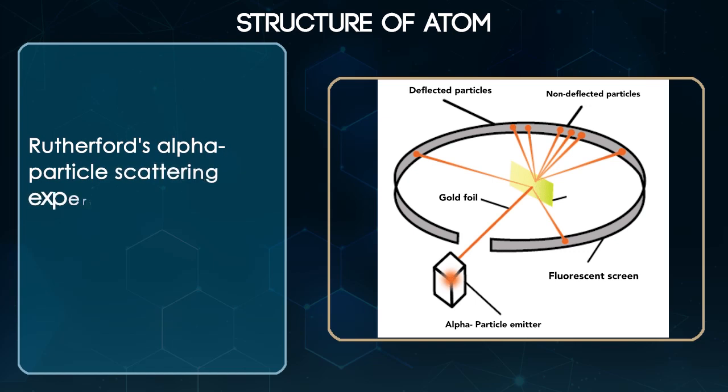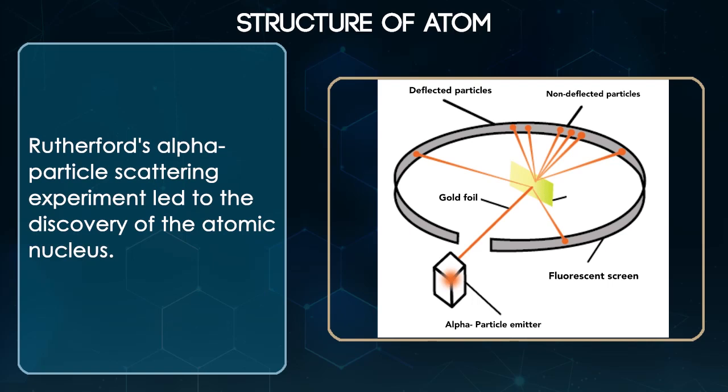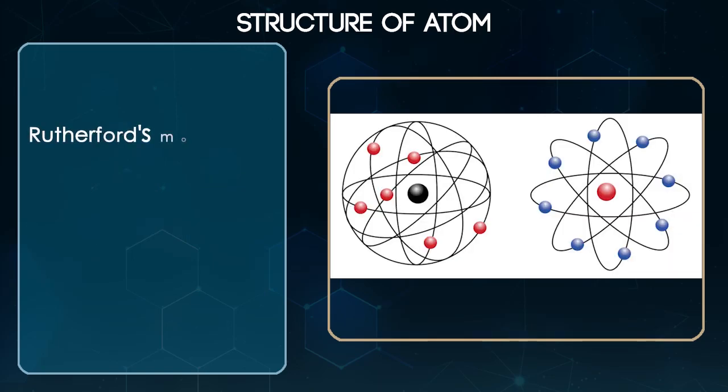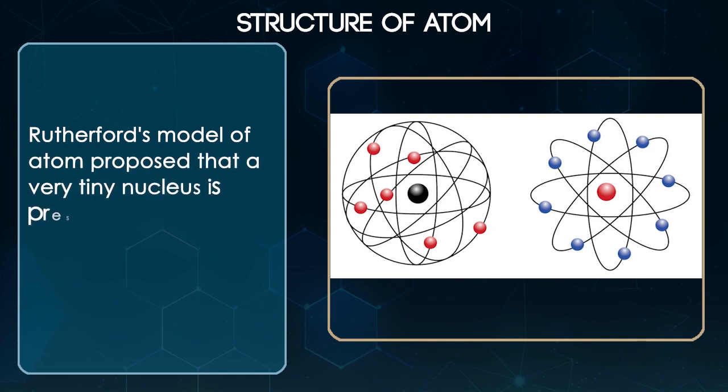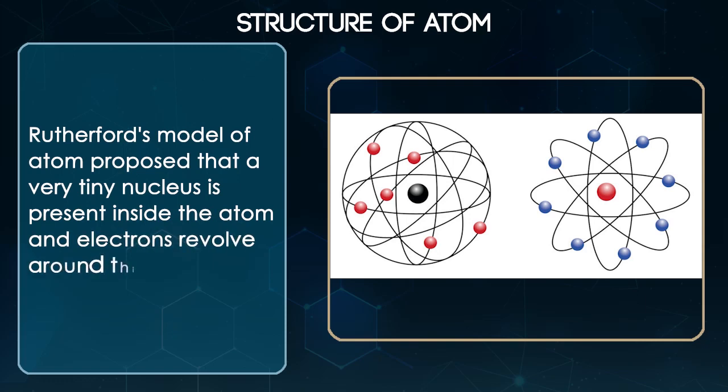Rutherford's Alpha Particle Scattering Experiment led to the discovery of the atomic nucleus. Rutherford's model of atom proposed that a very tiny nucleus is present inside the atom and electrons revolve around this nucleus.